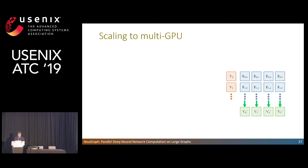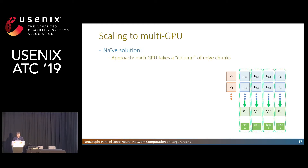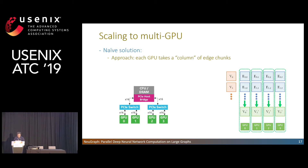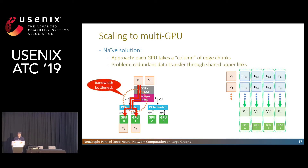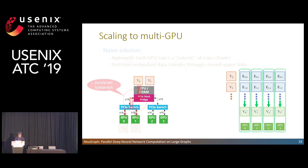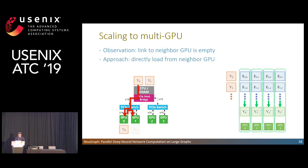Since graphs are usually large, we would like to scale GNN computation to multiple GPUs for faster processing. A naive solution is to let each GPU take a column of edge chunks and output the related vertex chunk. However, PCIe lanes are limited in modern servers, so a PCIe switch is introduced to support more GPUs in one server. Because each GPU will take all input vertex chunks, redundant data transfer through shared upper links results in a bandwidth bottleneck. We observe that the links to neighbor GPUs within the same PCIe switch are idle, and each GPU loads the same data. So we let each GPU directly load data from its neighbor GPU via GPU P2P communication, which reduces data transfer on the shared upper link.